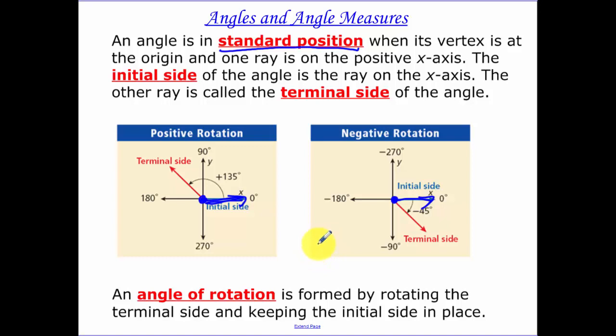And the ray in the angle is then rotated around. So here we have a positive 135 degree angle to our terminal side. When you rotate negative, you go down first.